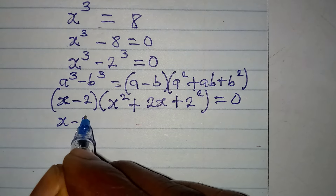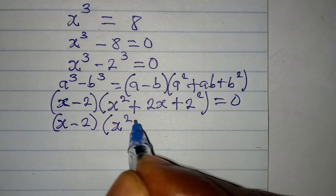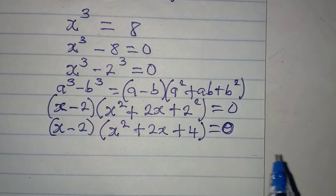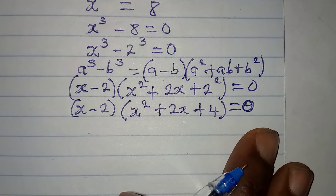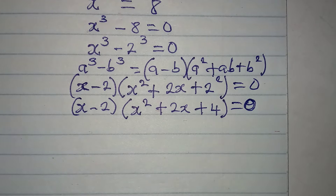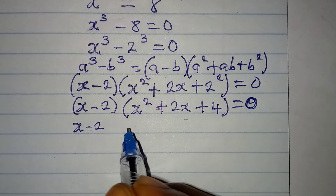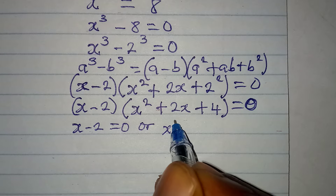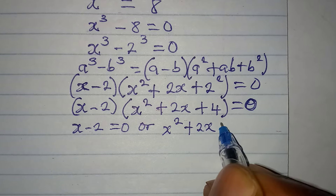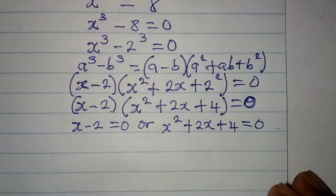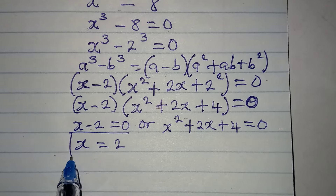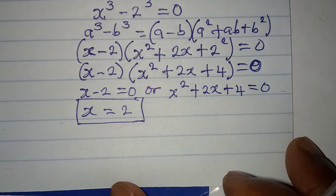Continuing, we have (x minus 2) times (x squared plus 2x plus 4) equals 0. We apply the zero product rule: either x minus 2 equals 0, or the quadratic x squared plus 2x plus 4 equals 0. From the linear equation x minus 2 equals 0, we conclude that x equals 2, which is the first solution.